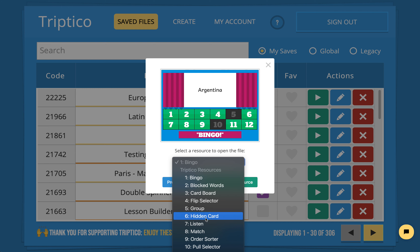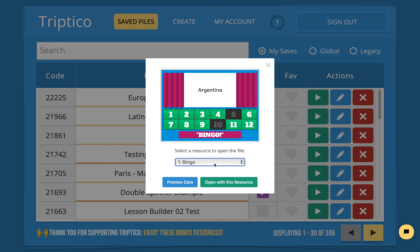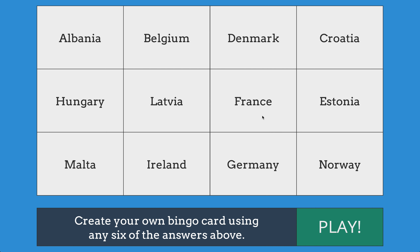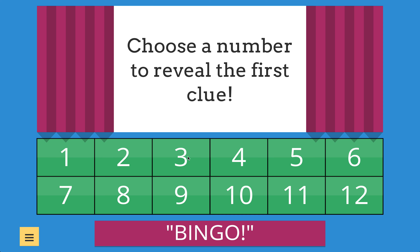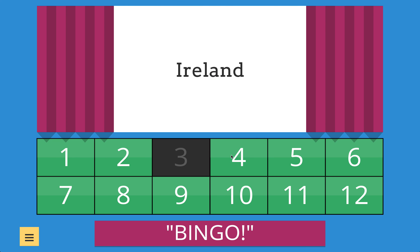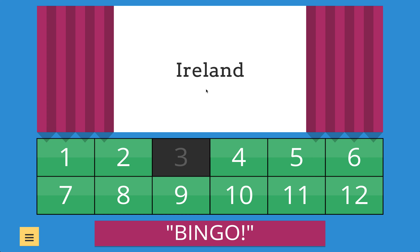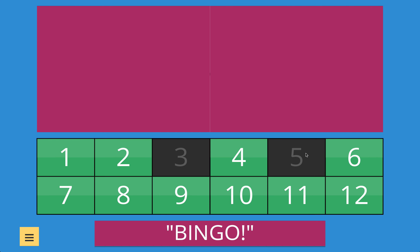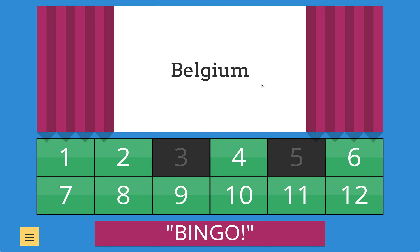We've got the list of all the different activities we can open with, but we'll open it with bingo. We can see the countries we just typed. The idea is that students create a bingo card and write down any six countries — say Albania, Belgium, Denmark, France, Ireland, and Malta. Then when we play the game, if the country selected is on their bingo card, they can cross it off. It's a basic traditional game of bingo where the countries are displayed and if you've got it on your card, you cross it off.